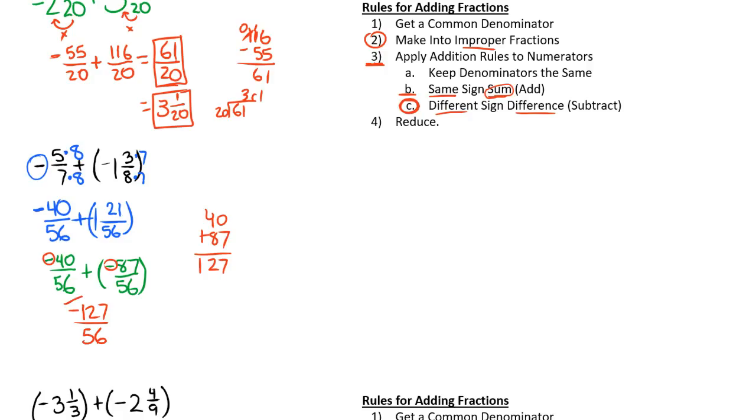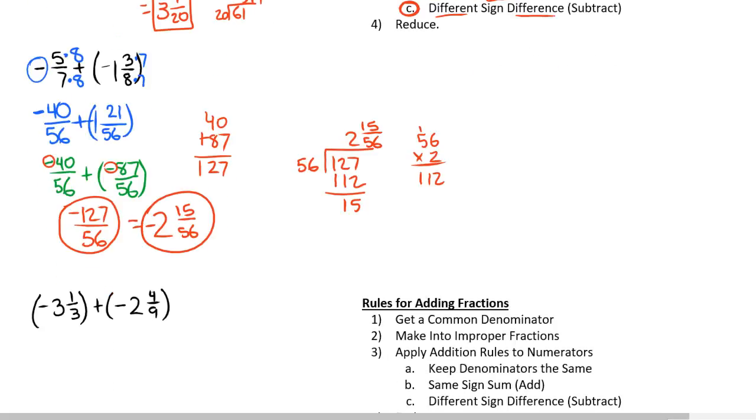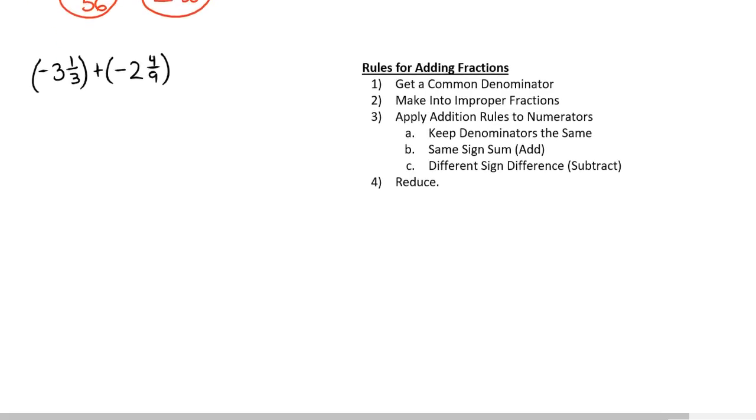Let's take a look at one more example. We have negative 3 and 1 third plus negative 2 and 4 ninths, so we need a common denominator. 9 and 3 can actually go into 9. Since we see that 9 can go into 9 and 3 can go into 9, let's turn these into ninths.